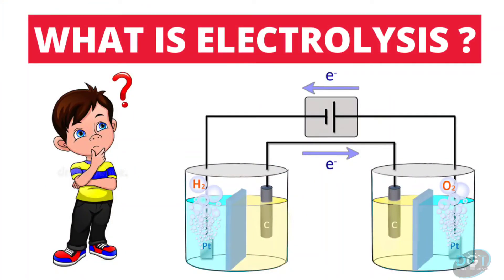First of all, what is electrolysis? In general, electrolysis is defined as the process by which ionic substances are decomposed into simpler substances when an electric current is passed through them.